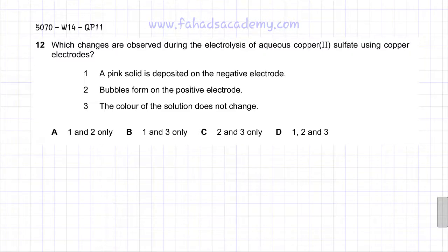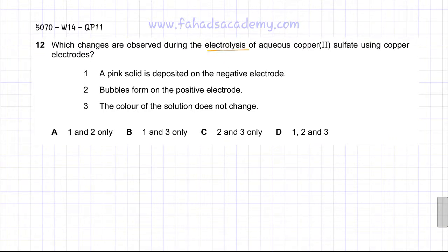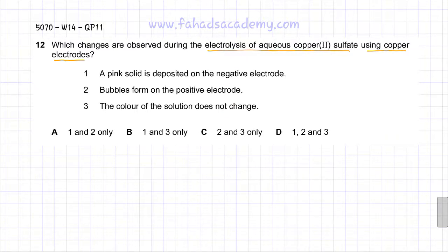This question is about electrolysis. It asks which changes are observed during the electrolysis of aqueous copper sulfate. We are electrolyzing aqueous copper sulfate using copper electrodes — not inert electrodes, but copper electrodes. Before answering, we need to first discuss the electrolysis of copper sulfate using copper electrodes.